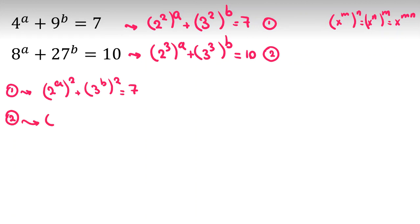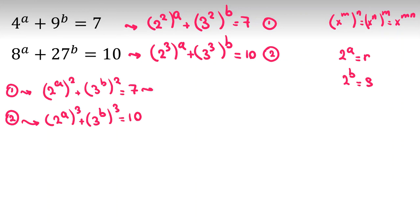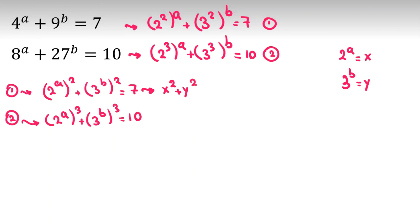And from the second equation, 2 to the 3a plus 3 to the 3b equals 10. Now I consider 2 to the a equal to x and 3 to the b equal to y. So here we can say x squared plus y squared equals 7, and x cubed plus y cubed equals 10.